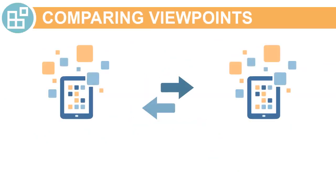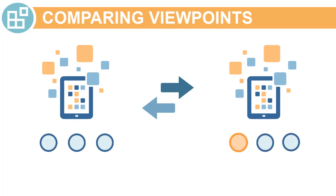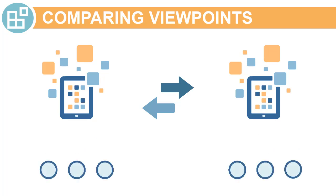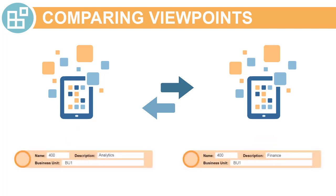You can compare two viewpoints to determine node differences between the viewpoints. You can find nodes that exist in one viewpoint but do not exist in the other viewpoint. You can compare relationships to find nodes that exist in both viewpoints but have different parents. You can compare property values to find nodes that exist in both viewpoints but have differences in one or more property values.